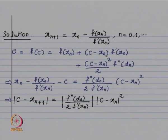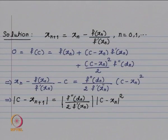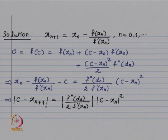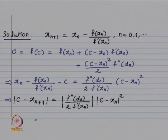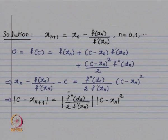Dividing by f'(x_n) and rearranging gives x_n - f(x_n)/f'(x_n) - c = f''(d_n)/(2 f'(x_n)) · (c - x_n)². The left-hand side is x_{n+1} - c, so taking modulus: |c - x_{n+1}| = |f''(d_n)/(2 f'(x_n))| · (c - x_n)². In this example, we want to show |c - x_{n+1}| ≤ (1/2)|c - x_n|², meaning the coefficient of (c - x_n)² must be ≤ 1/2.